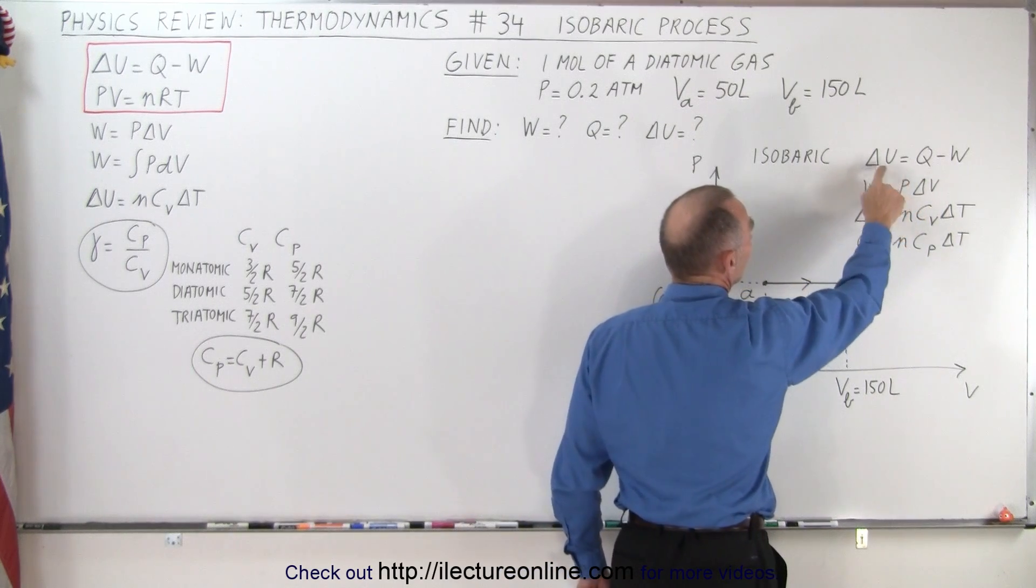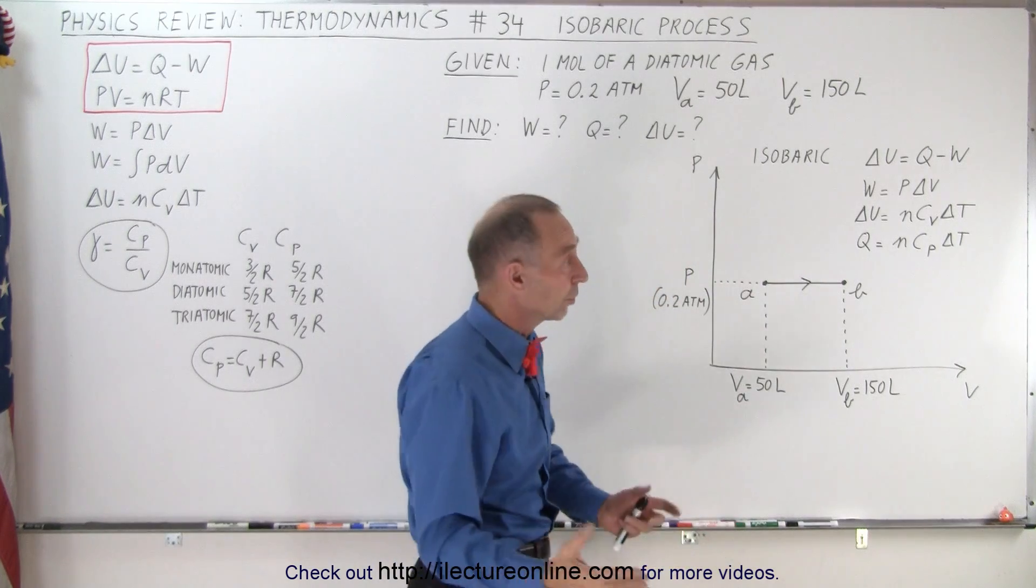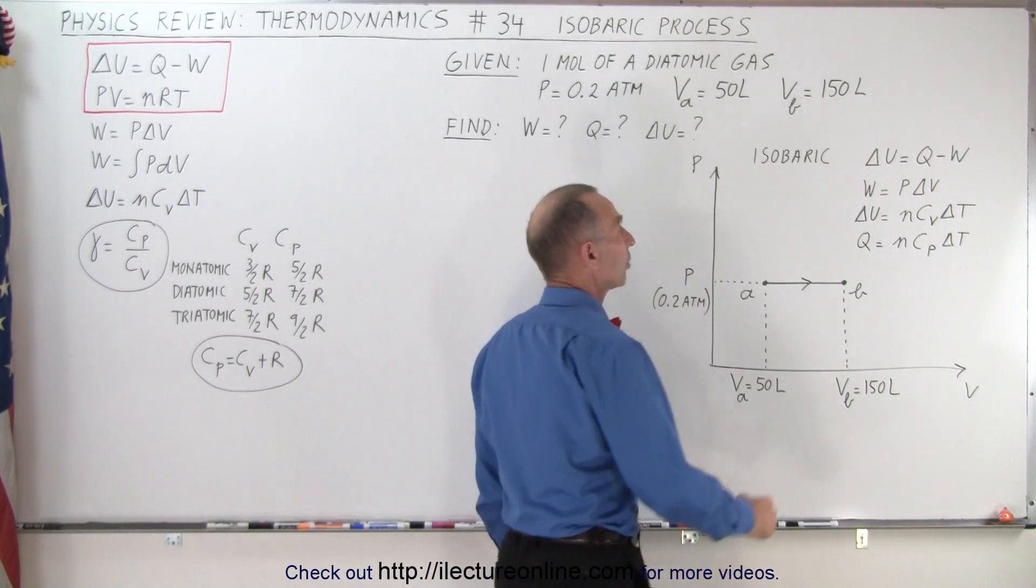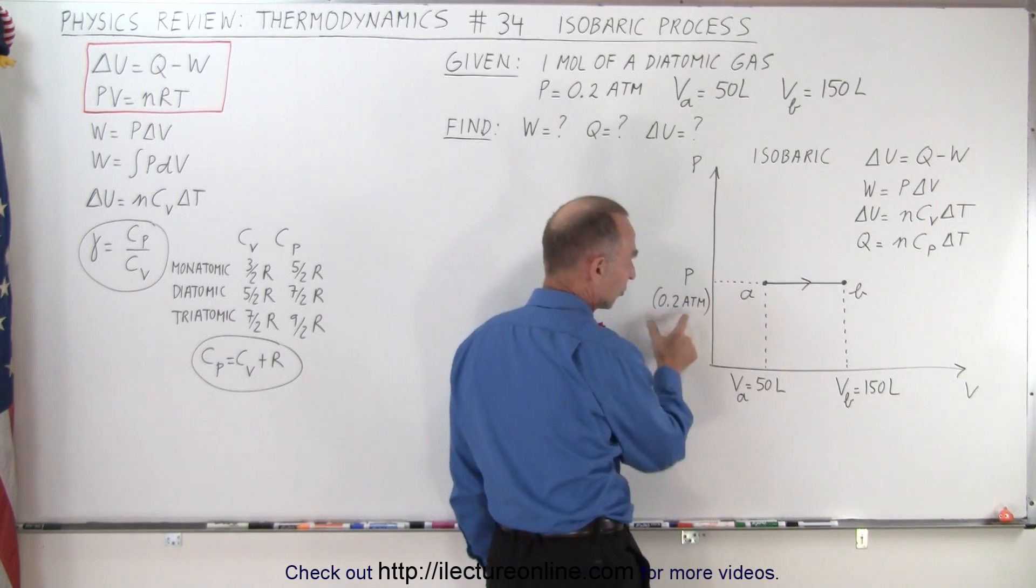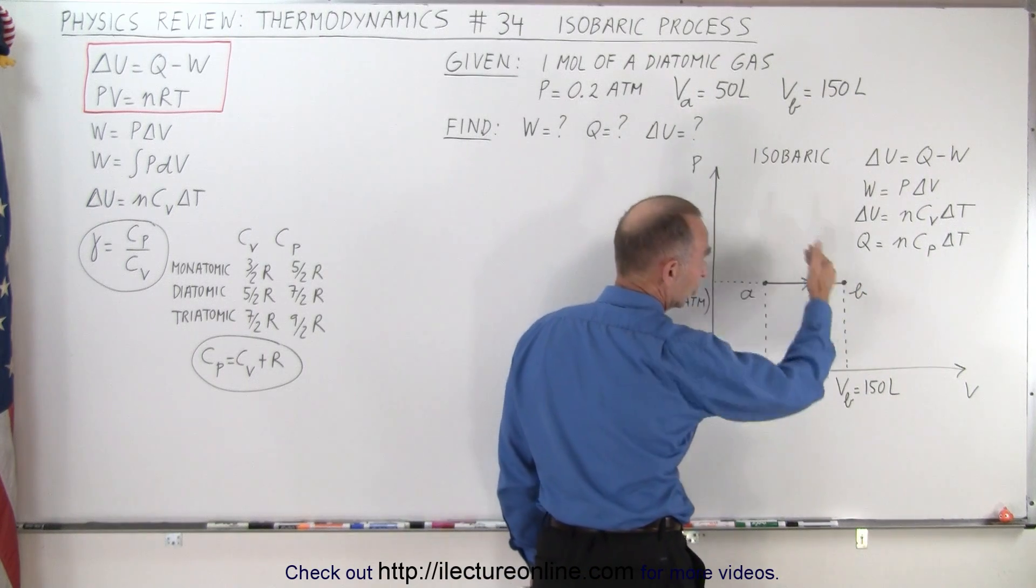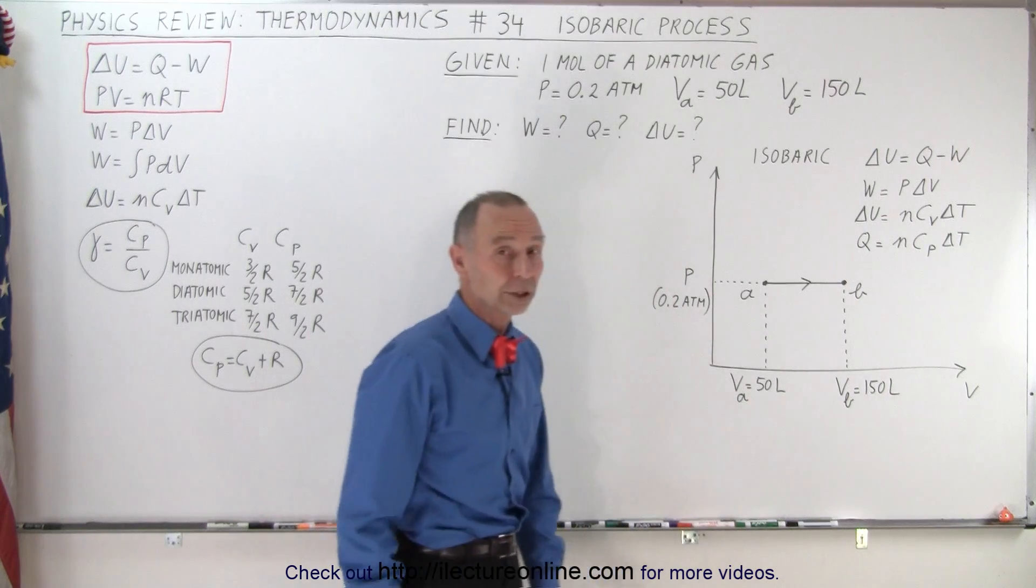In this case, none of the three components of that equation are zero, so they are what they are. The work done is going to be the pressure times the change in the volume, and since we're given the pressure and we know what the change of the volume is, we can easily calculate the work done. So that's easy.